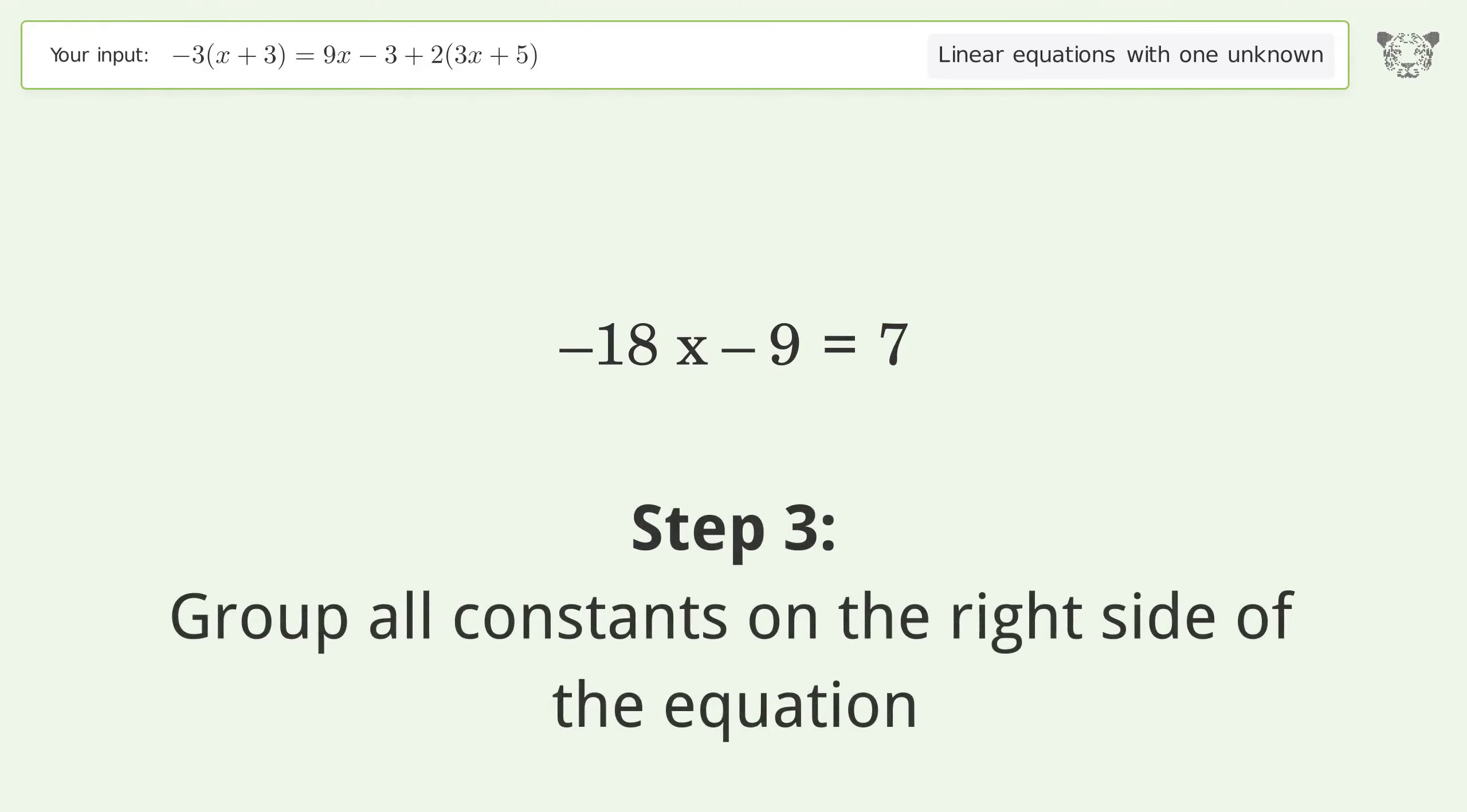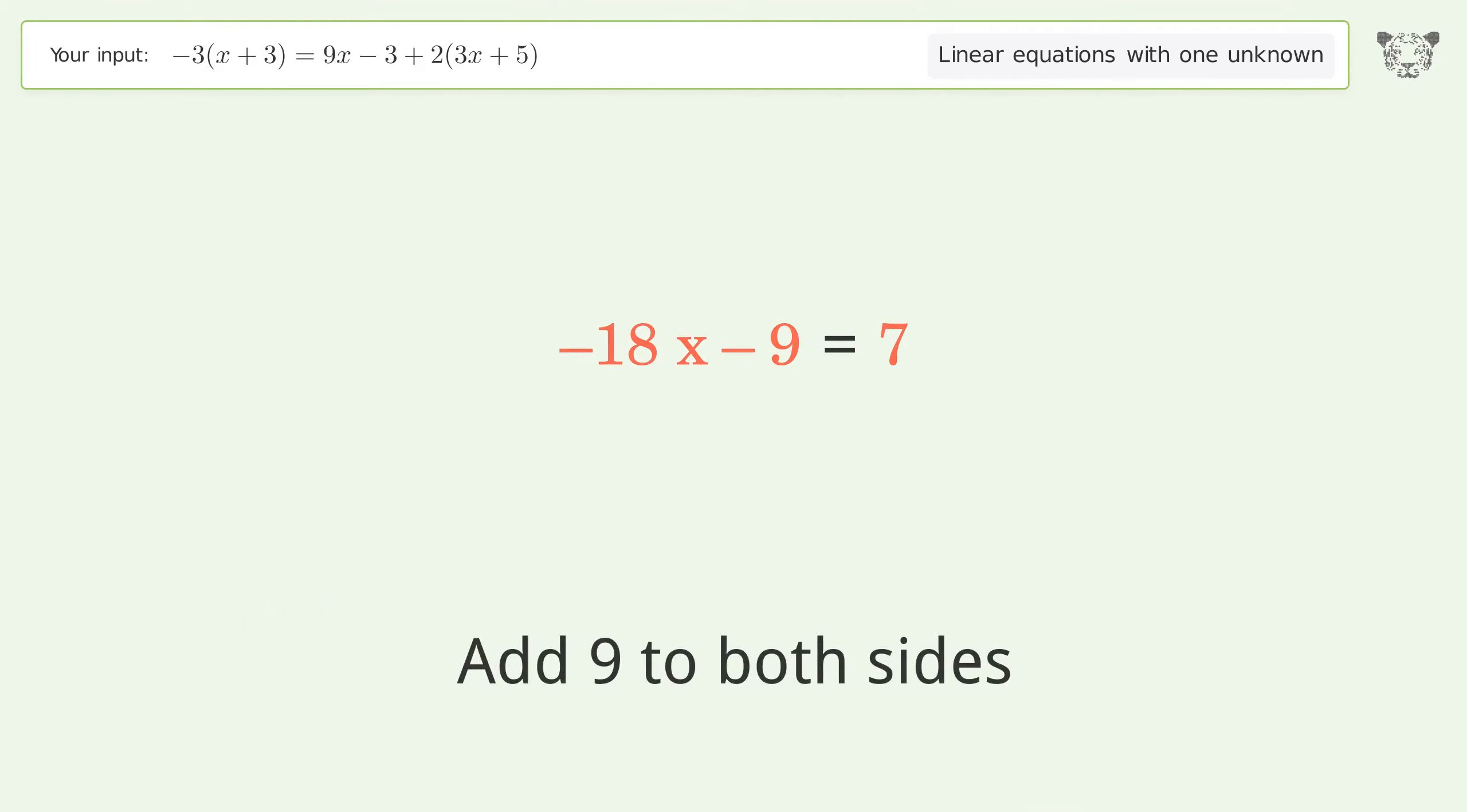Group all constants on the right side of the equation. Add 9 to both sides, then simplify the arithmetic.